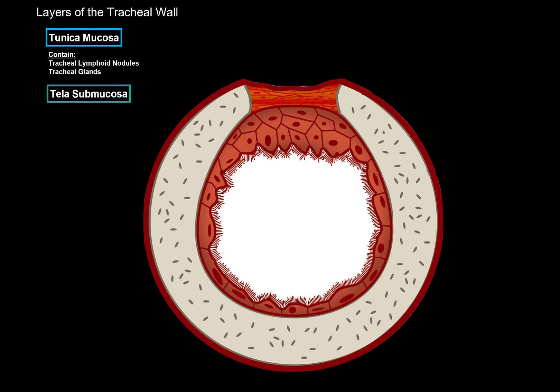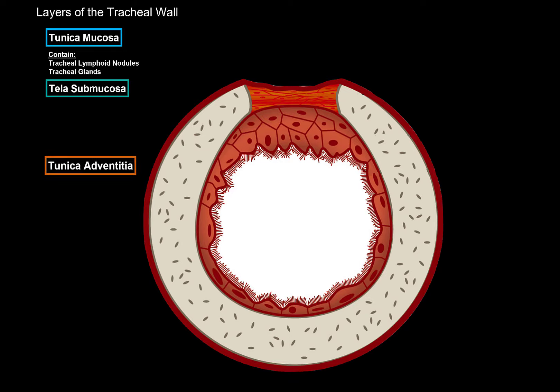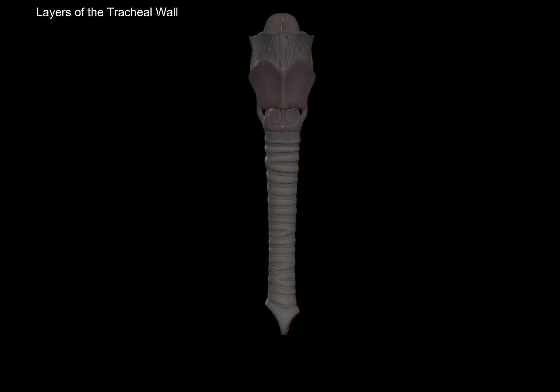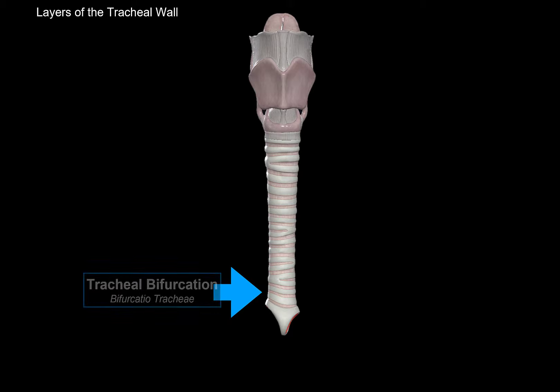We have the cartilages and the membranous part of the trachea. Externally to that, we have the outermost layer called the tunica adventitia, consisting of dense connective tissue for protection. The trachea starts off at the larynx and then goes all the way down until it splits. The area where it splits is called the tracheal bifurcation.